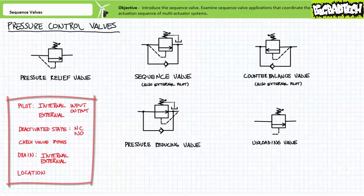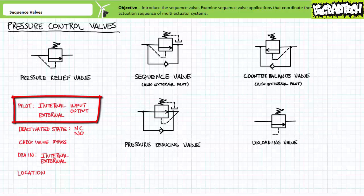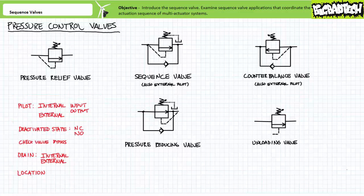This might be a review of this topic. However, repeat exposure to this topic is pretty helpful. Pilot line: all pressure control valves monitor pressure using a dashed pilot port. Sometimes the pilot line is internal to the valve, or can be an external remote connection.